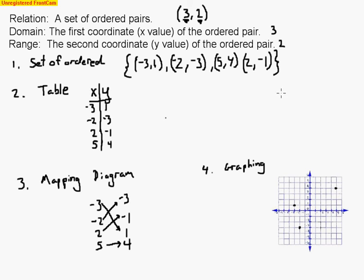And the last one, 2, negative 1. So here we go. Two spaces to the right: one, two. And then we go down one space. So down one space puts us right there. And that's it.